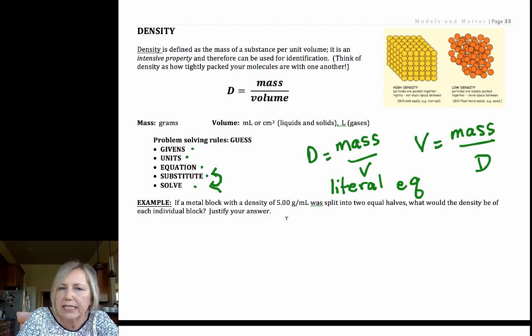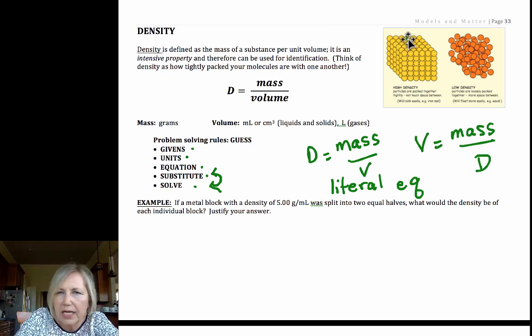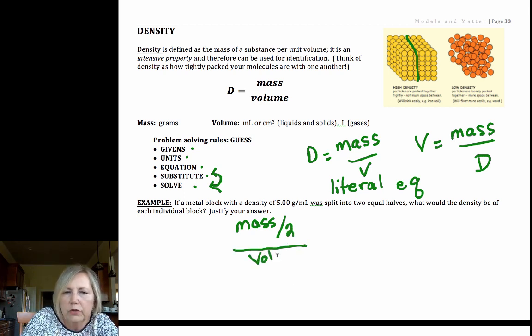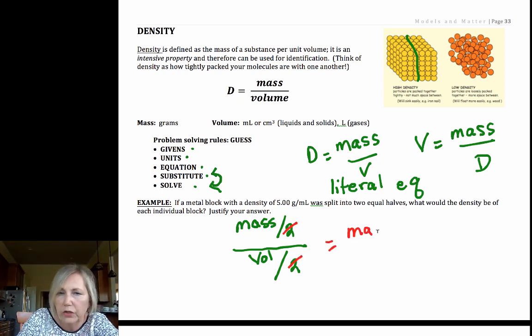Let's take a look. This first one is very conceptual. I have a metal block with a density of 5 grams per ml and it is split in half. What's the new density? Isn't our new mass the old mass divided by two? And isn't our new volume our old volume divided by two? Hopefully you can see those twos cancel. I have the same mass per volume as I had before.